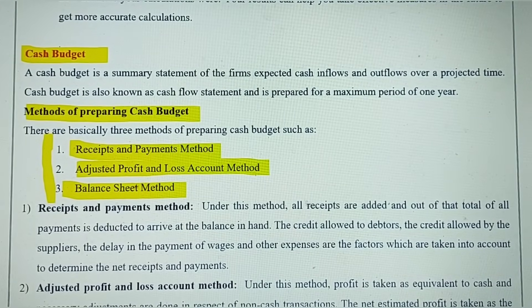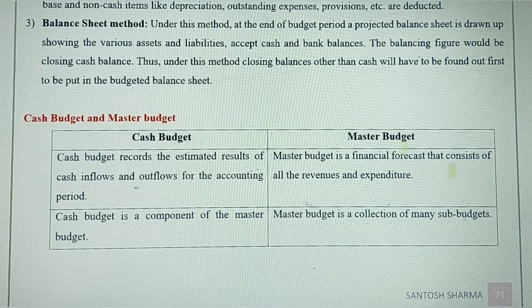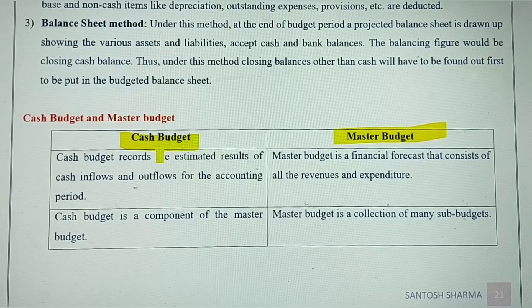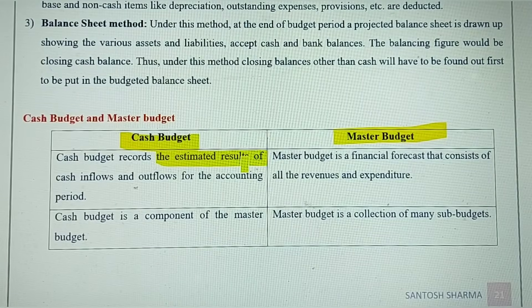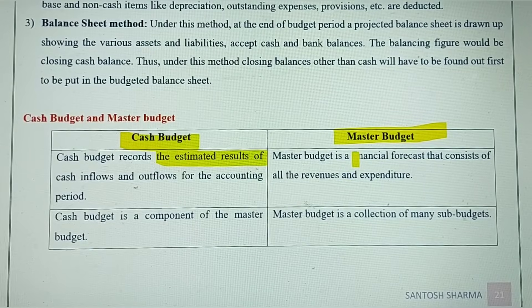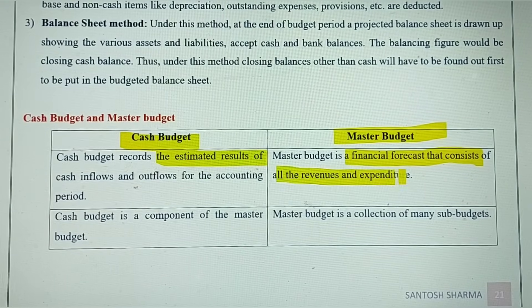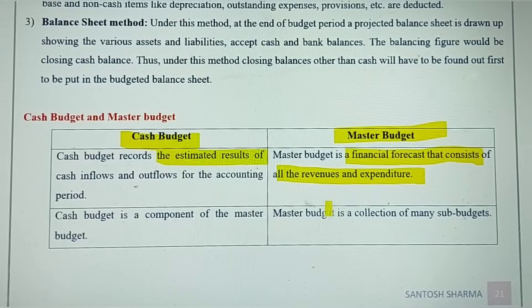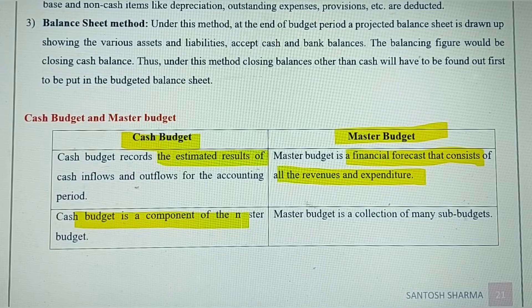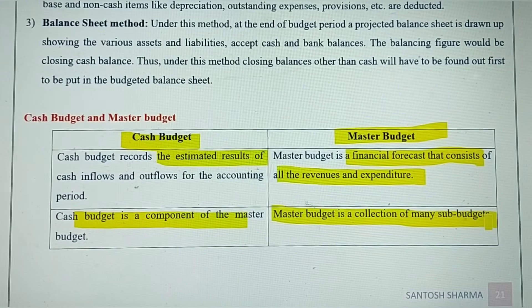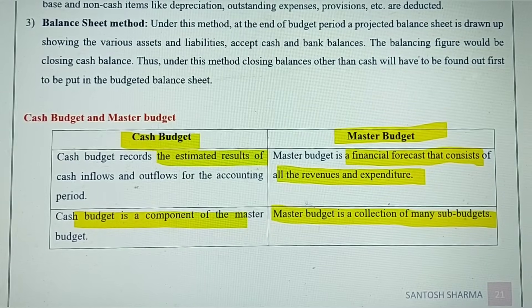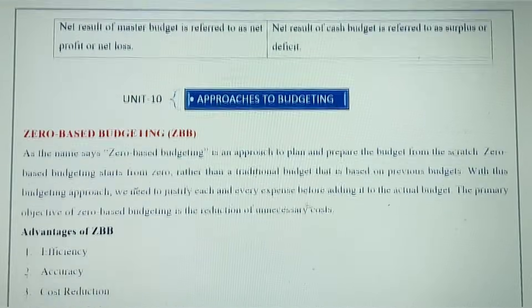You might get a question on the difference between cash budget and master budget. Cash budget records all estimated cash inflows and outflows of a company, whereas master budget is a financial forecast consisting of all revenues and expenditures during a particular period. Cash budget looks after only cash transactions; master budget is a collection of all different types of budgets — it is the parent budget — and the cash budget is just one component of it.